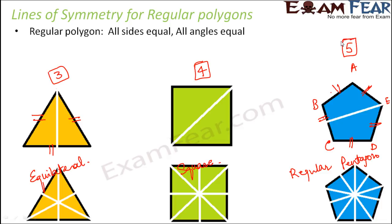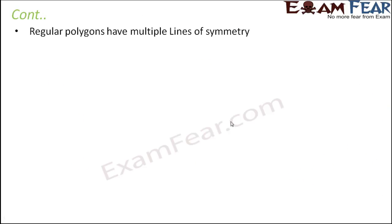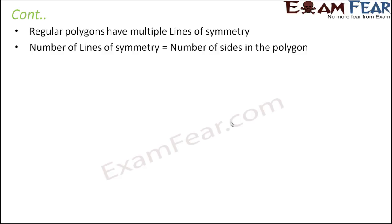So an equilateral triangle has three lines of symmetry, a square has four lines of symmetry, and a regular pentagon has five lines of symmetry. We conclude that for a regular polygon, the number of lines of symmetry is equal to the number of sides. For example, an equilateral triangle has three sides and therefore three lines of symmetry; a square has four sides and therefore four lines of symmetry; a regular pentagon has five sides and therefore five lines of symmetry. Regular polygons always have multiple lines of symmetry, and the number of lines of symmetry always equals the number of sides.